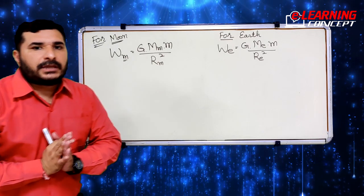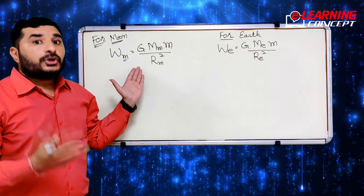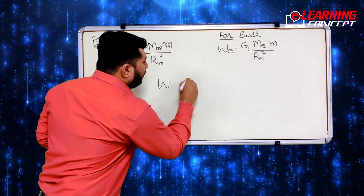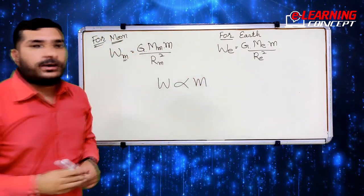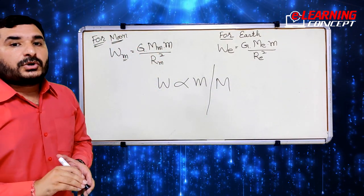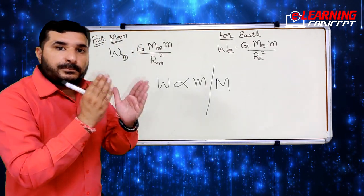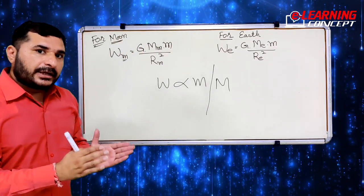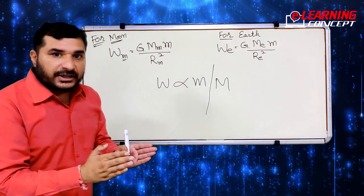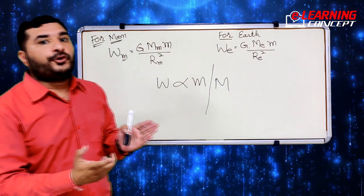Friends, the gravitational force will be different for each because weight depends on the mass of the object — either the mass of the Earth or the Moon. So gravitational force is depending on mass, and you know that the mass of the Moon and the Earth is not the same. It means that the gravitational force produced by the Earth is not the same as the gravitational force produced by the Moon.